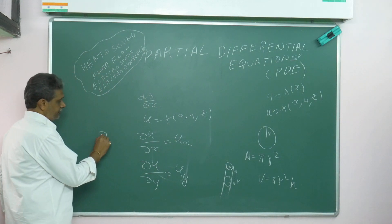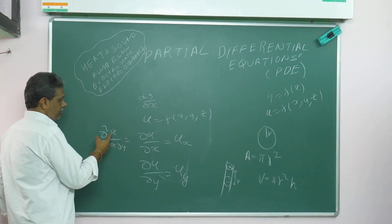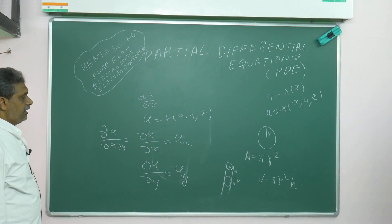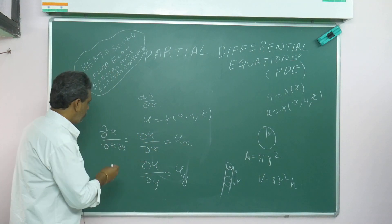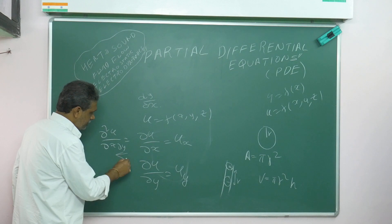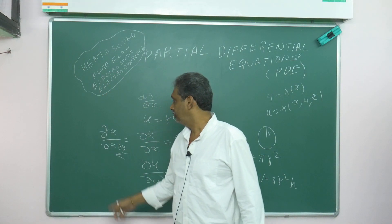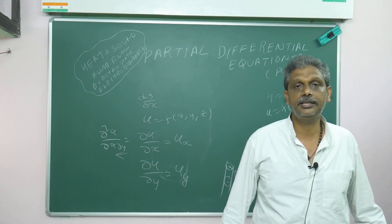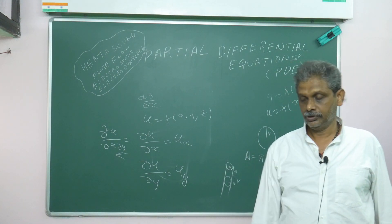If I write ∂²u/∂x∂y, remember one thing in partial differentiation: like Urdu is written from right to left, you differentiate from left to right. You do ∂u/∂y first, then differentiate with respect to x. Come from left to right—partial differentiation follows this rule.